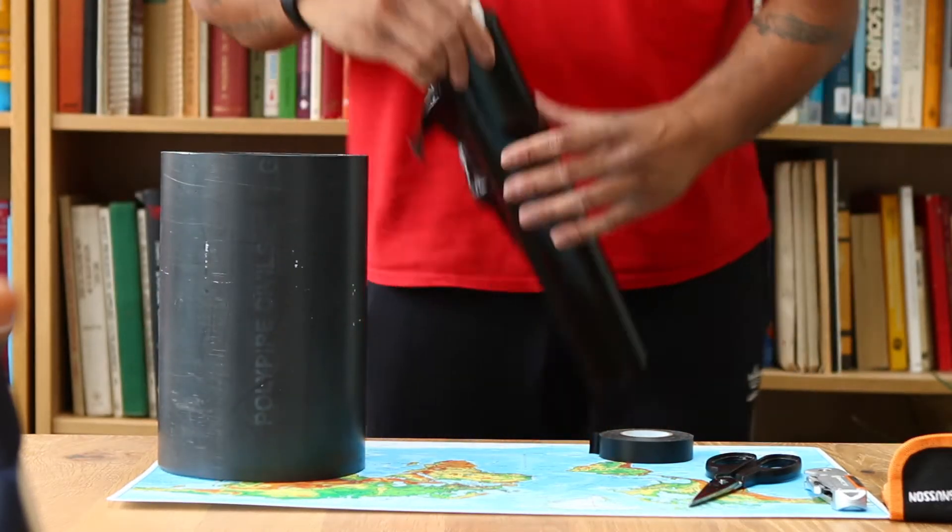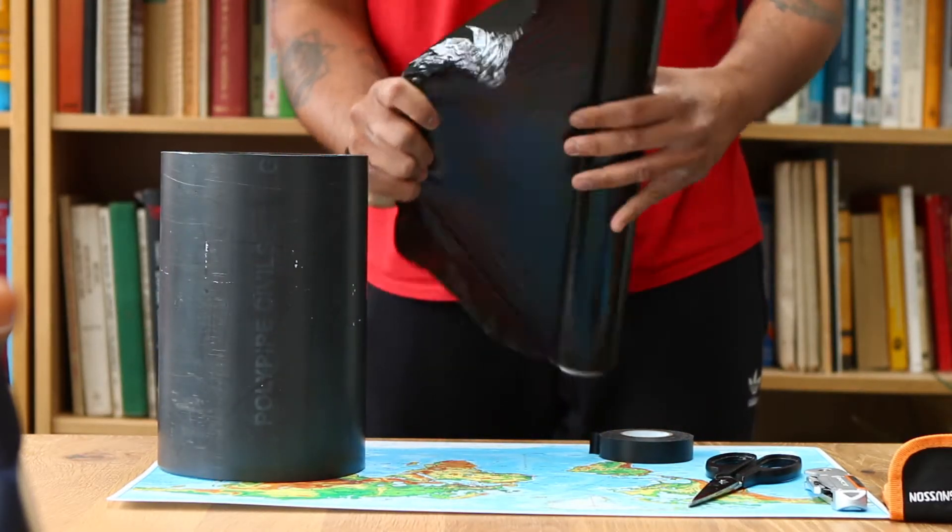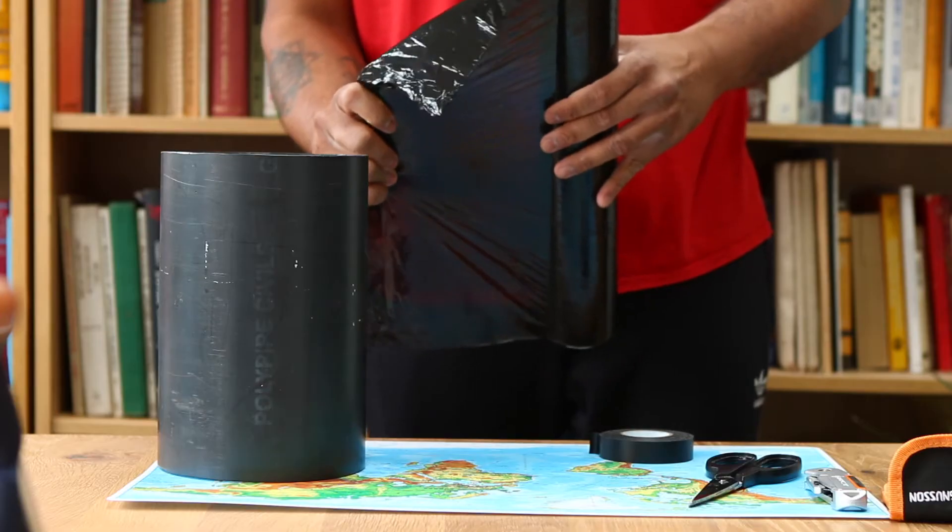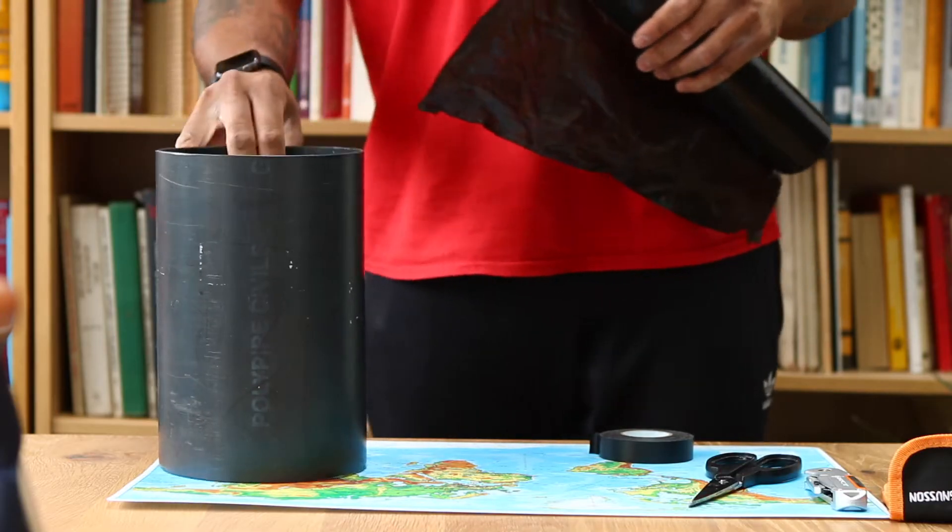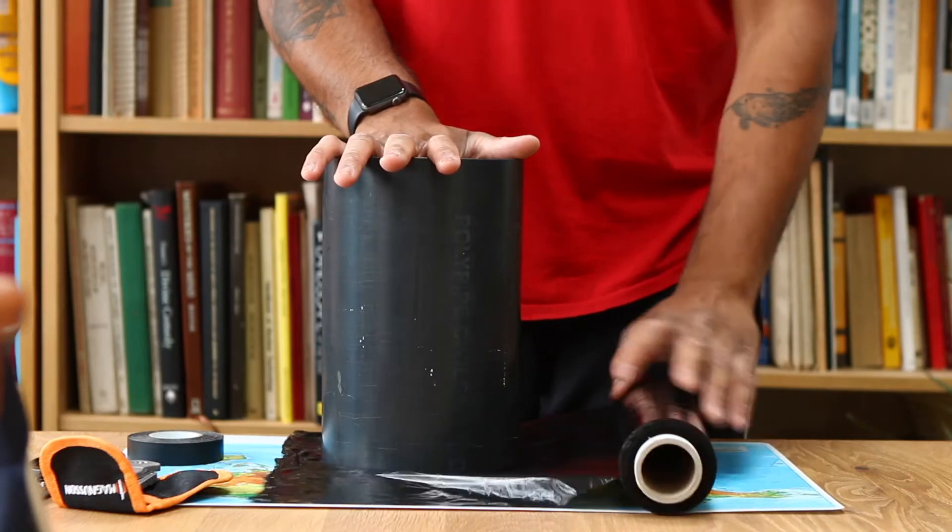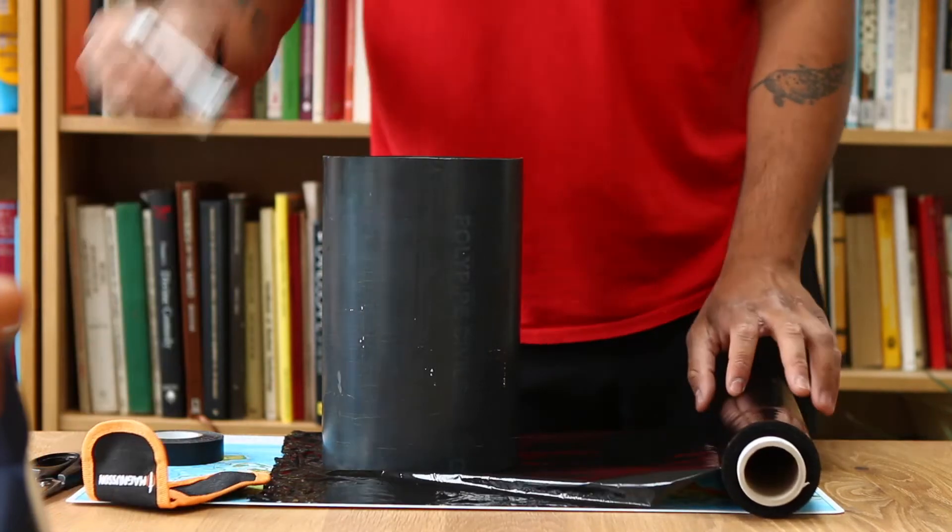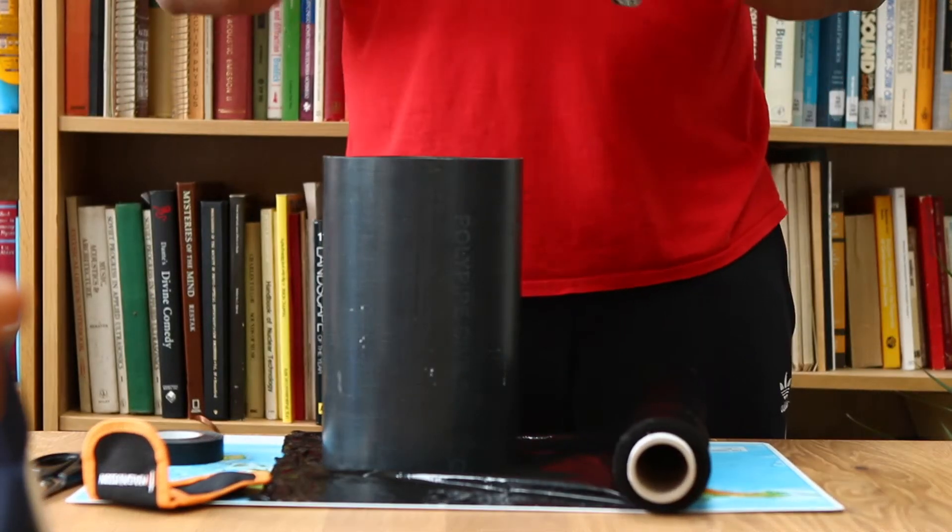Next, we need a thin piece of material to form a membrane on the top. I have some thin black wrap that people use to wrap around parcels for delivery. You could use latex sheeting, cling film, or even greaseproof paper or something like that.